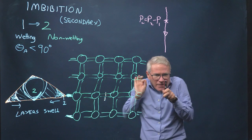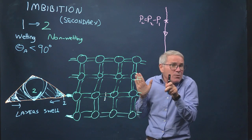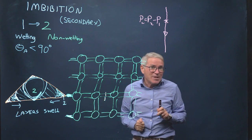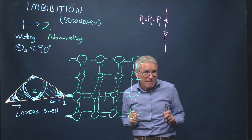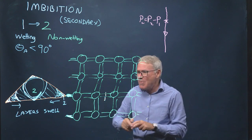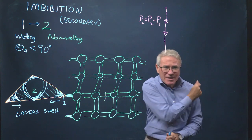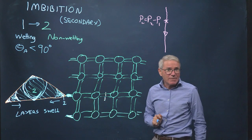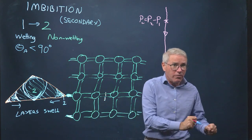We go from a meniscus that's very, very slowly swelling — and the speed of flow in porous media is extremely slow, often just a few centimetres a day — very, very slowly swelling, and then we get to this critical point, and snap! The centre fills with the wetting phase. And that process is called snap-off.